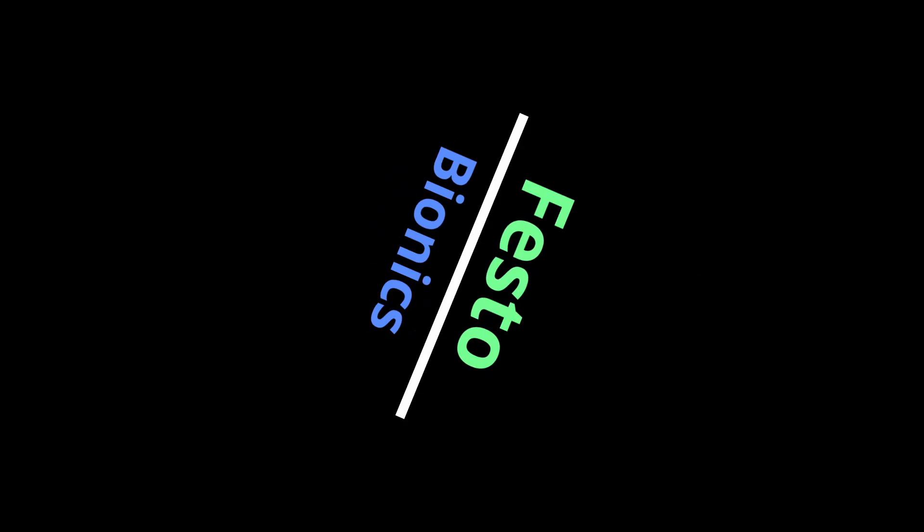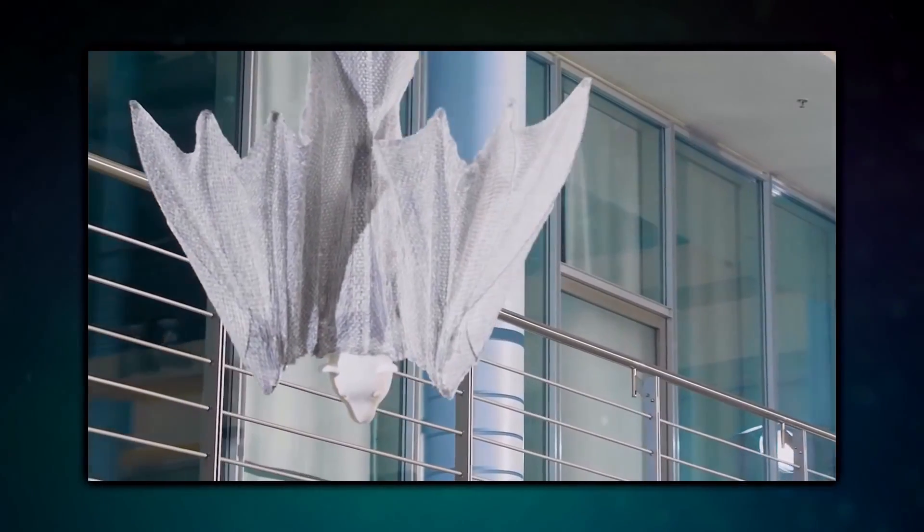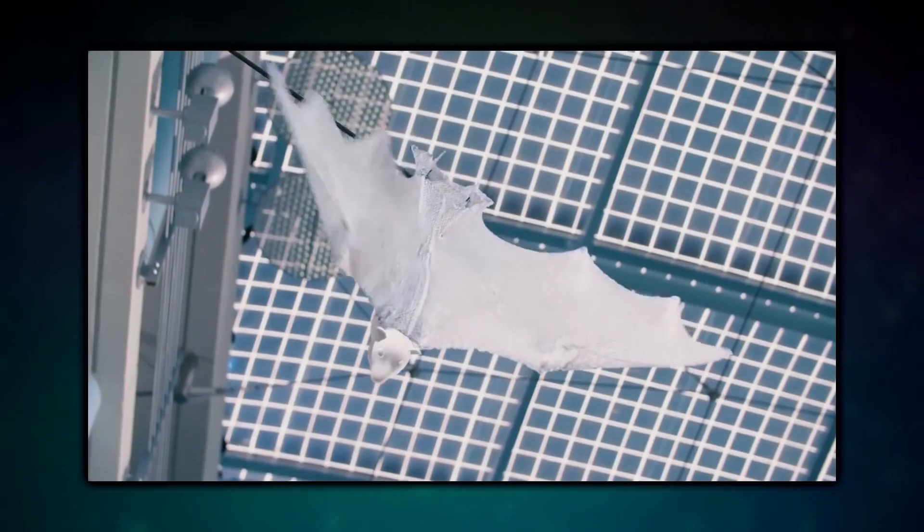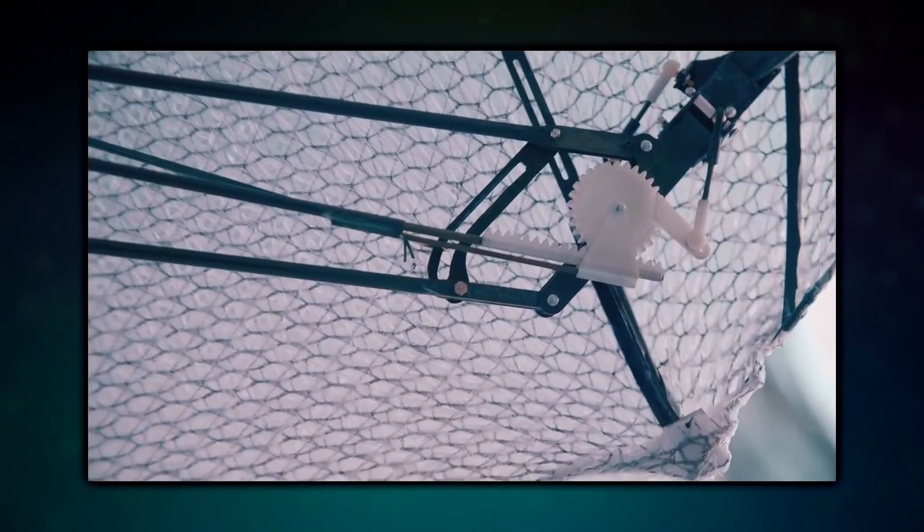German automation company Festo has been getting inspiration from an unlikely source, the Animal Kingdom. Since 2006, Festo has been building animal-like robots as part of its Bionic Learning Network.